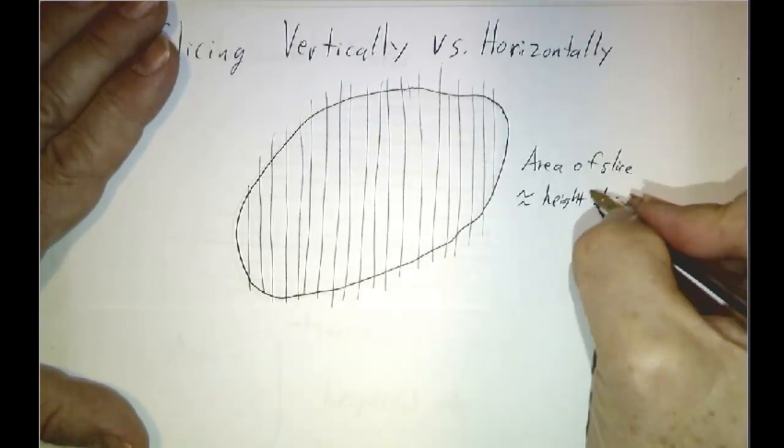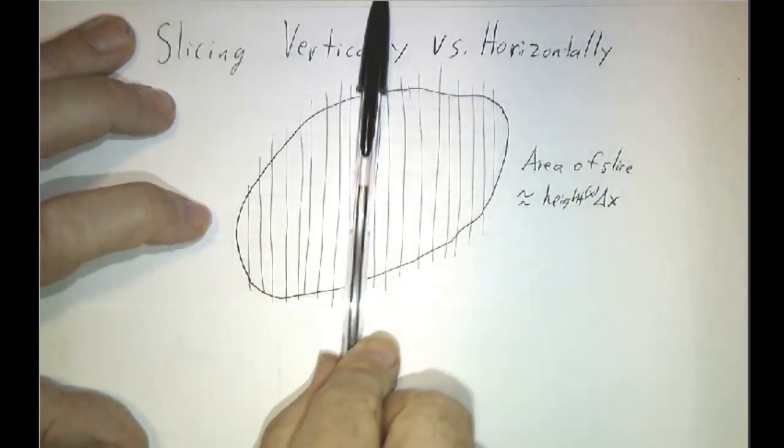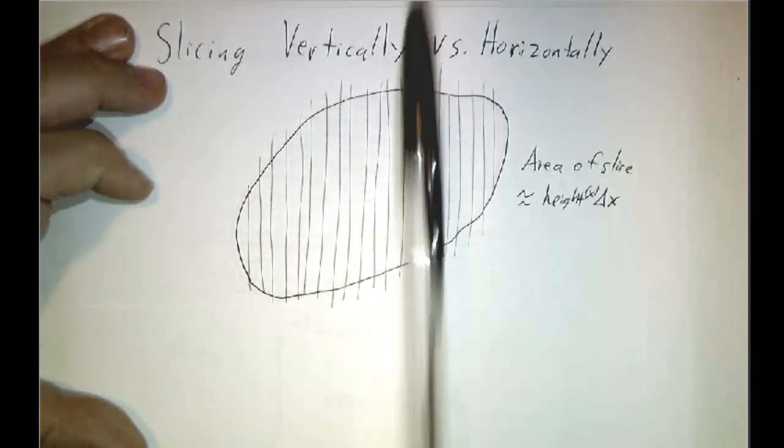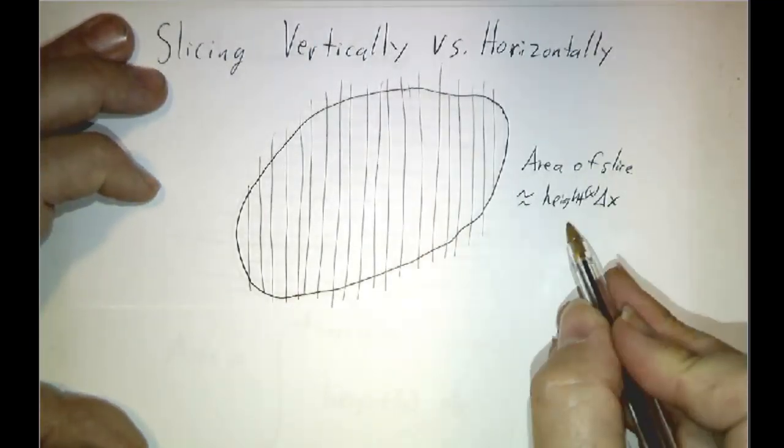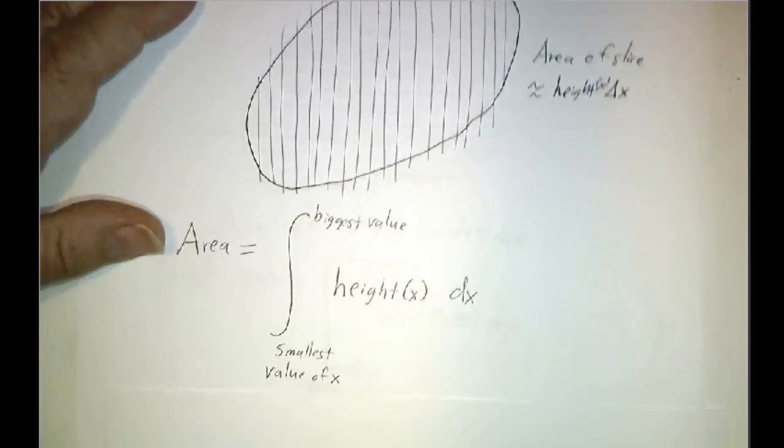And of course, the height is a function of x. The height over here is small, the height over here is much bigger, the height over here is small again. So the height is a function of x, then we add up all the slices and we take a limit and we get an integral.